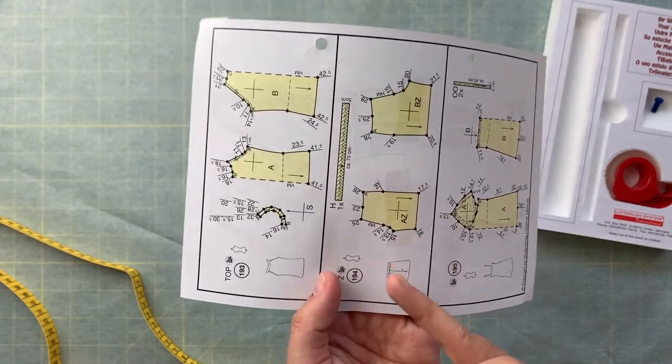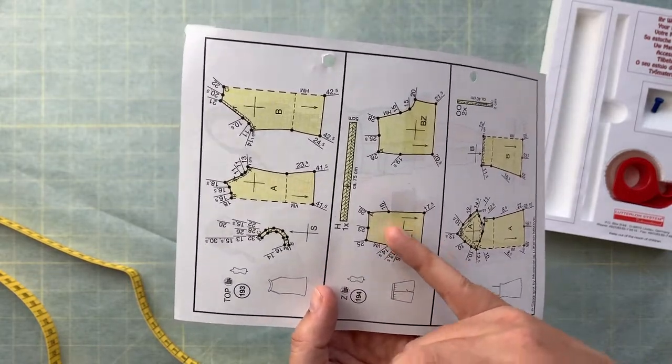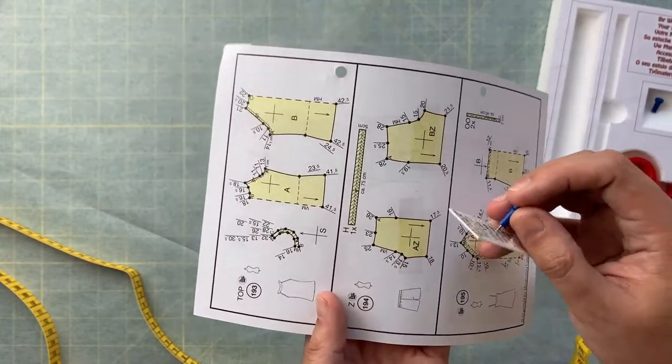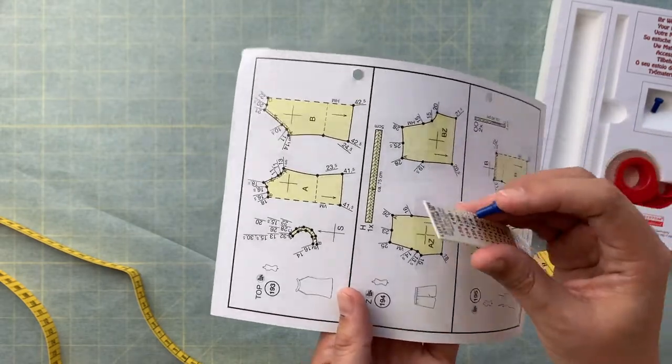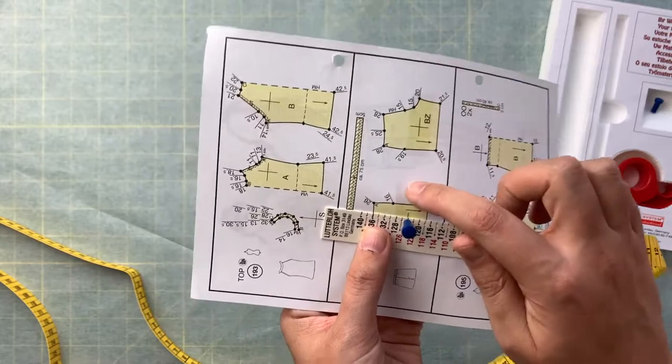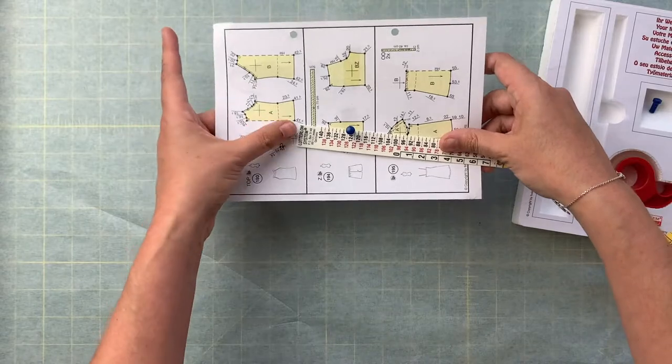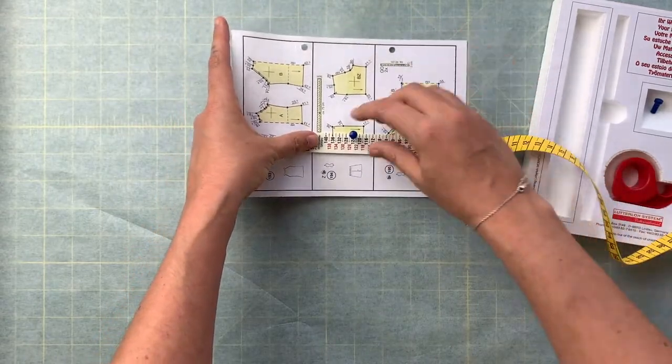Then you take the pin and put it through the center of whatever pattern piece you're about to draft. This one here, we're going to do the front of the pants, and there's a little plus sign, and so that's where the pin goes next. You put that right through the center of that square. You can see I have a little bit of tape on mine just to help reinforce that hole that we're making in the paper so that it doesn't grow over time.